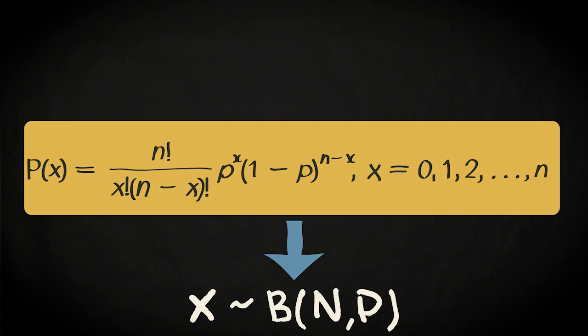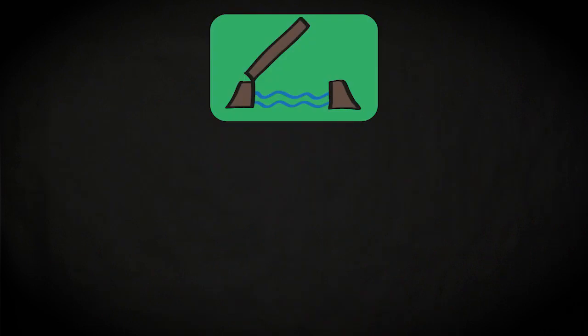Now, let's apply the binomial formula to a specific example. Once, every day, you travel along a route where you have to pass a bridge. The bridge is open 10% of the time, but the exact moments of its opening are random.